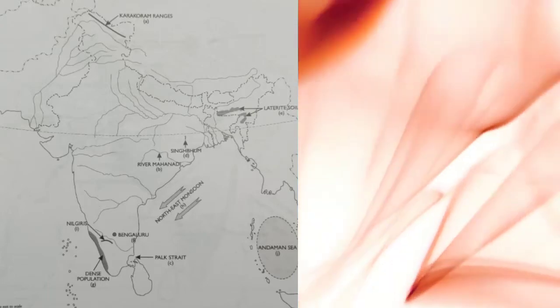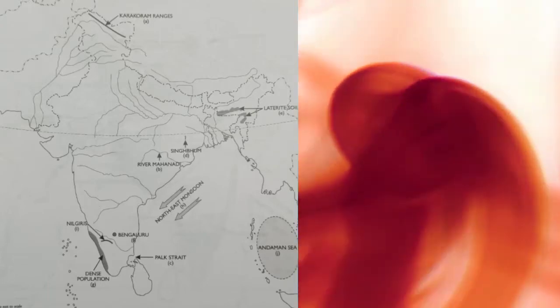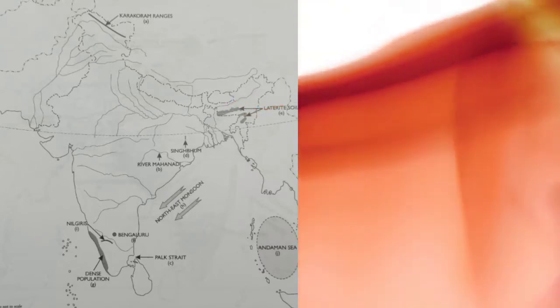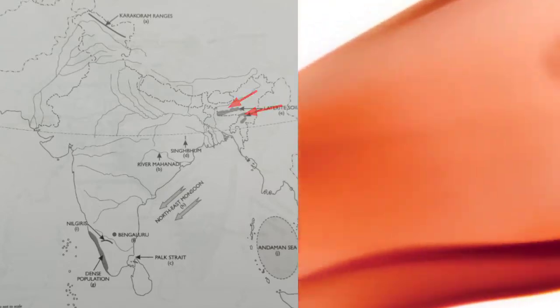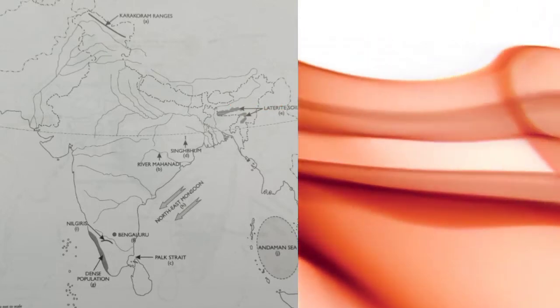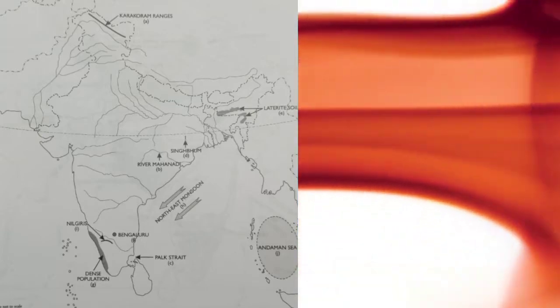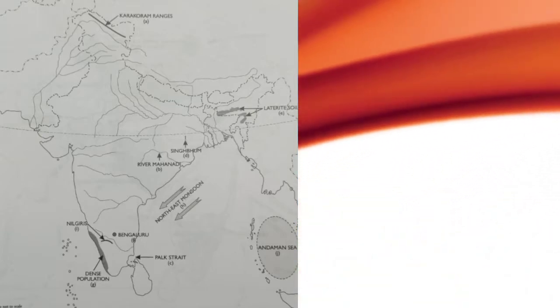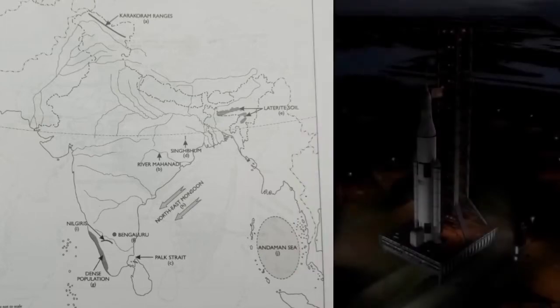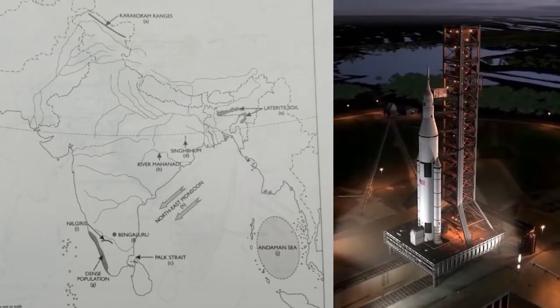Mark an area of laterite soil in the Northeast part of India — some part of Assam — must sketch this area in the northeastern part of India. Next, mark with a dot and name Bengaluru — definitely dot this place.